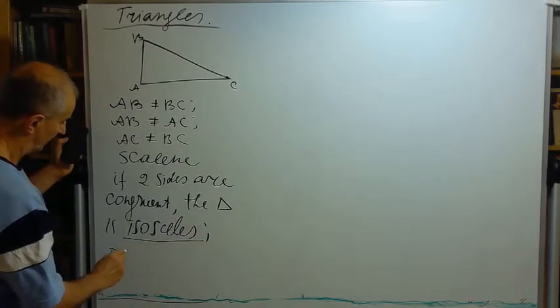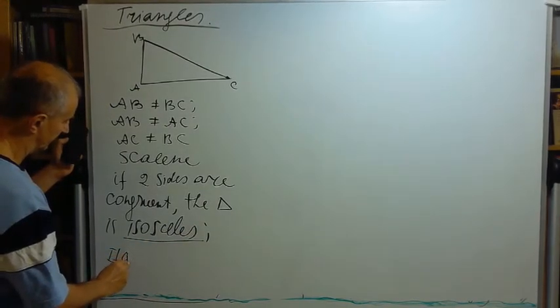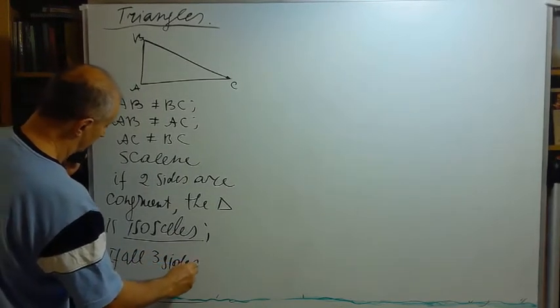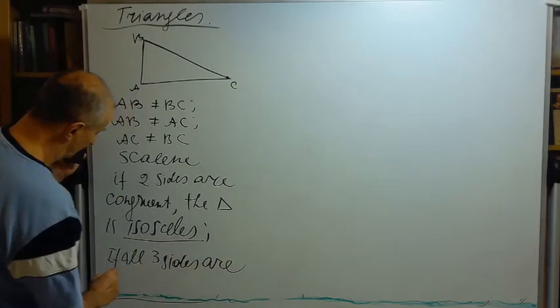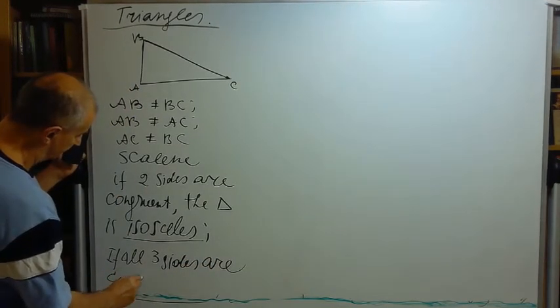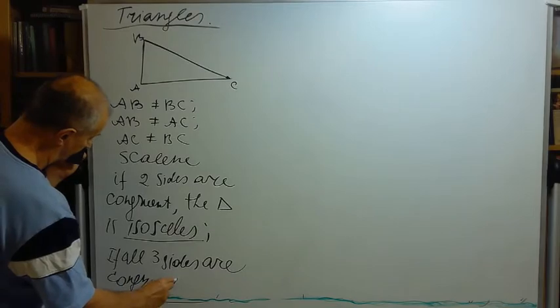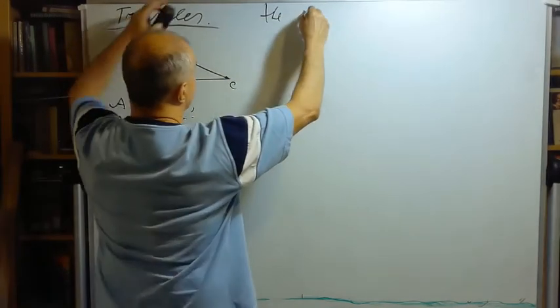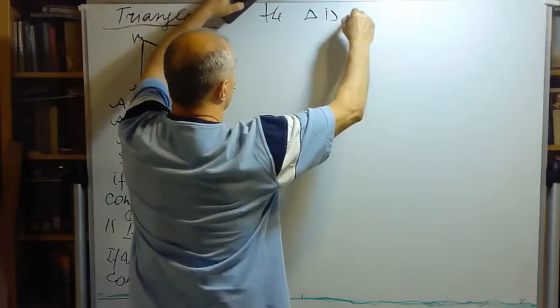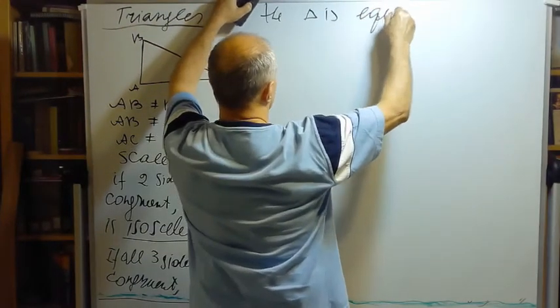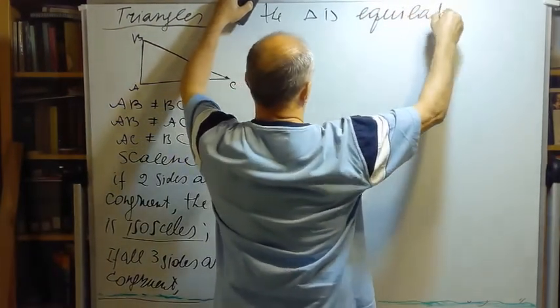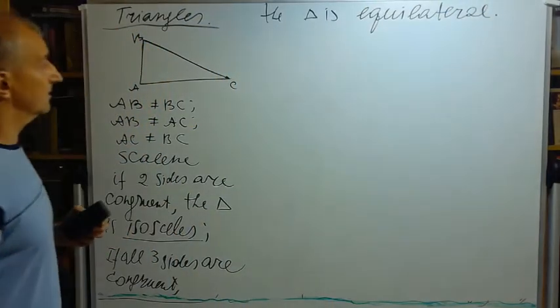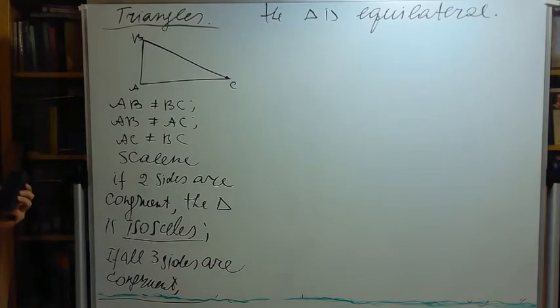If all three sides are congruent, the triangle is called equilateral.